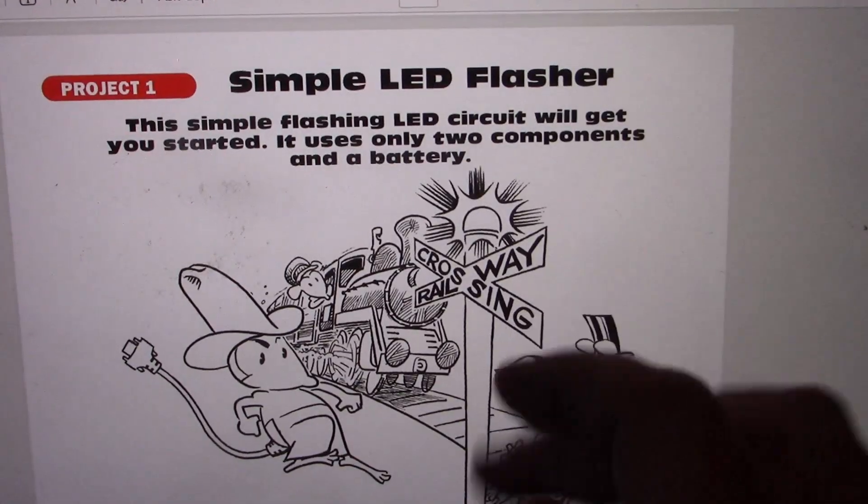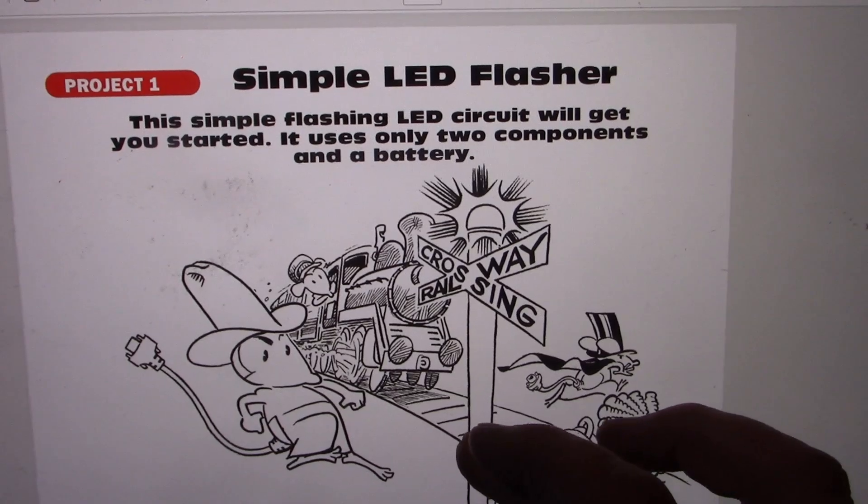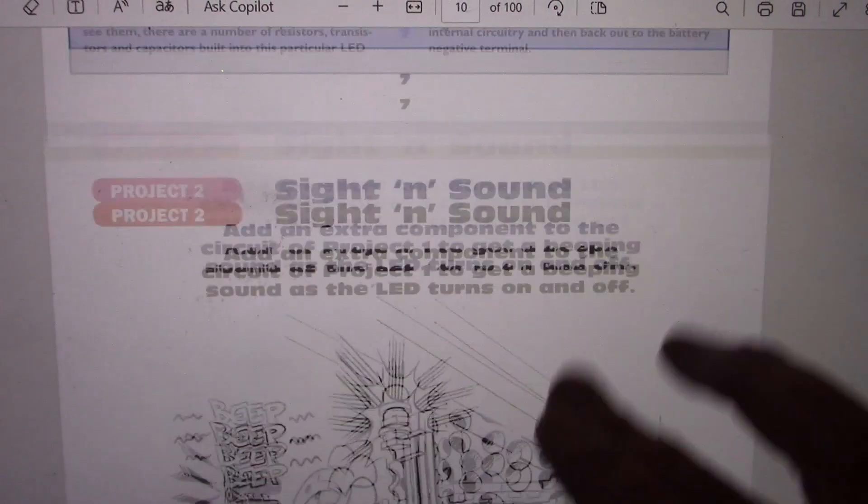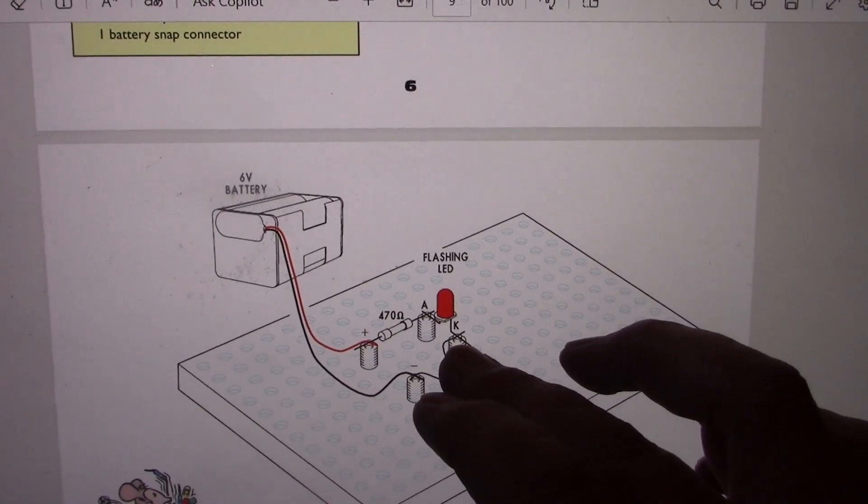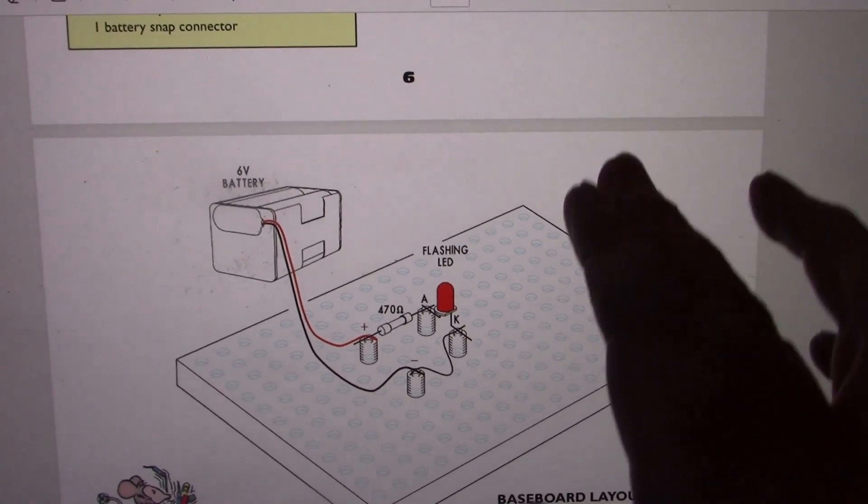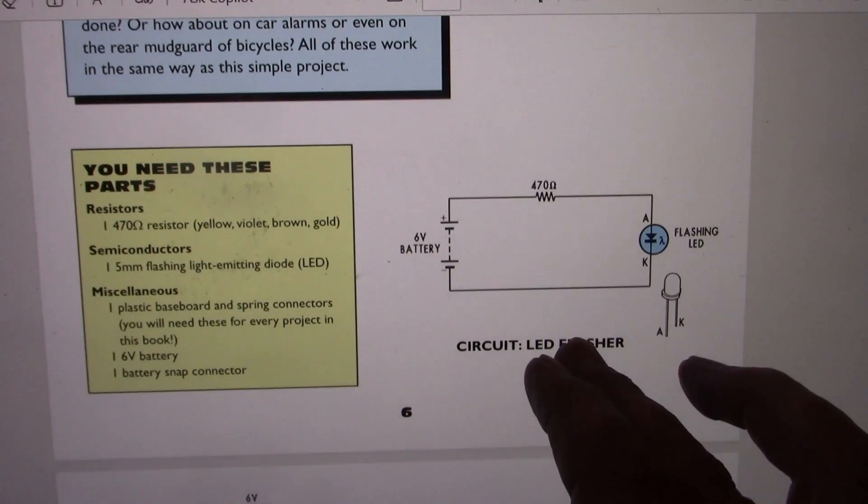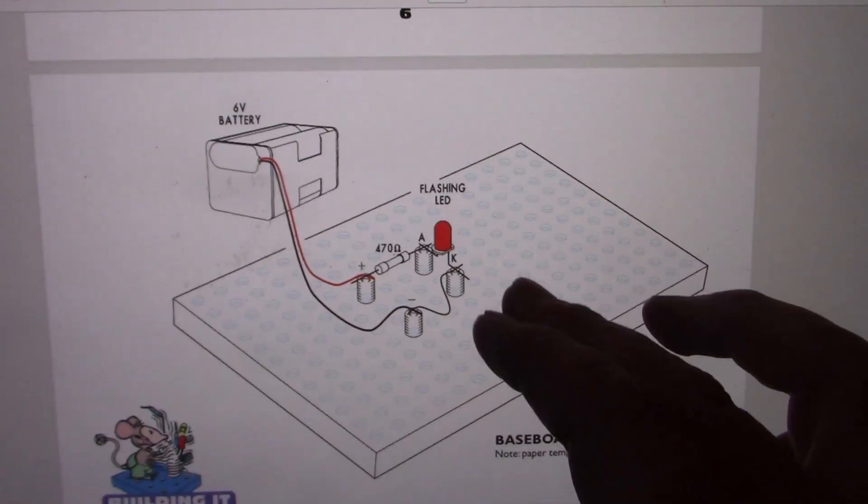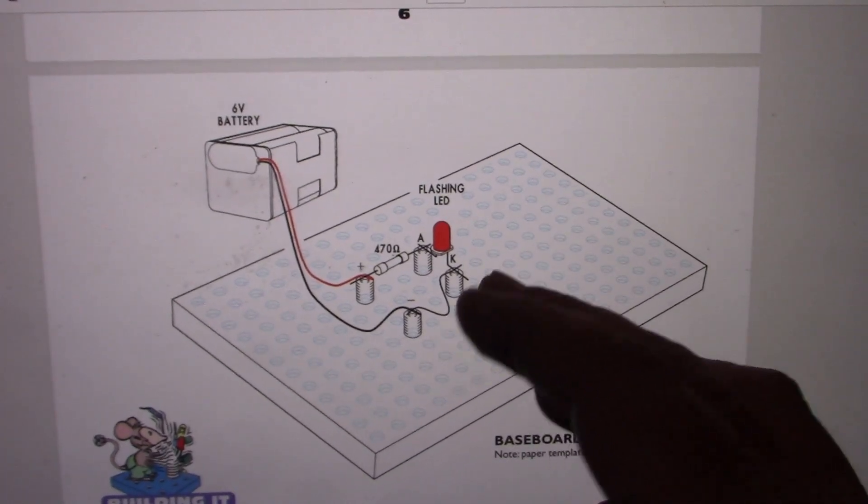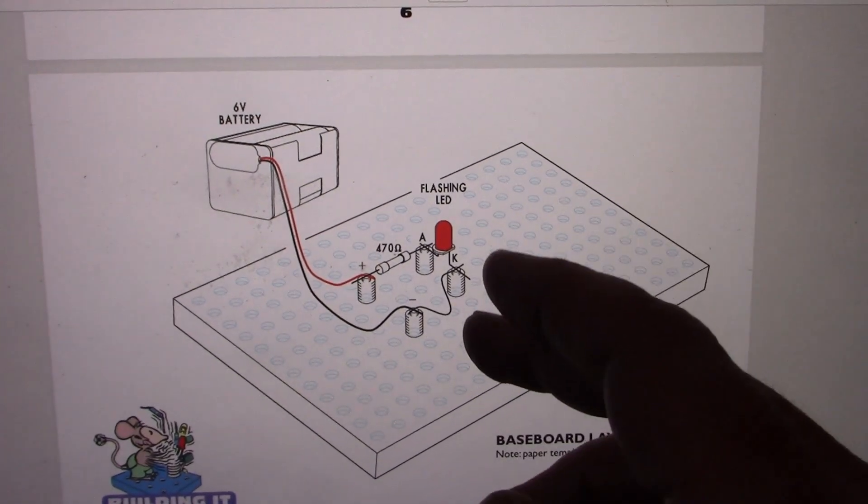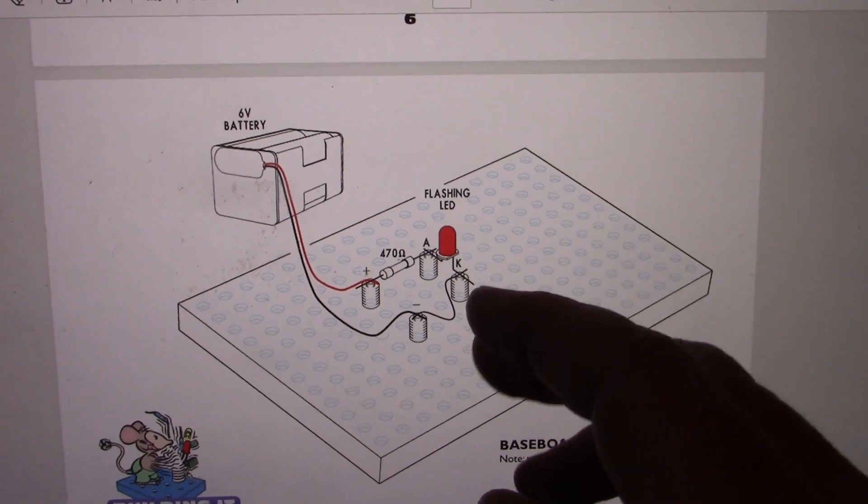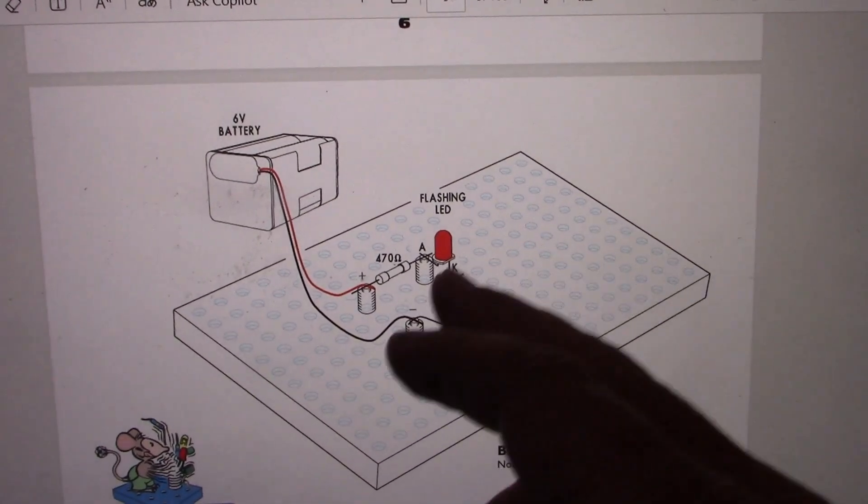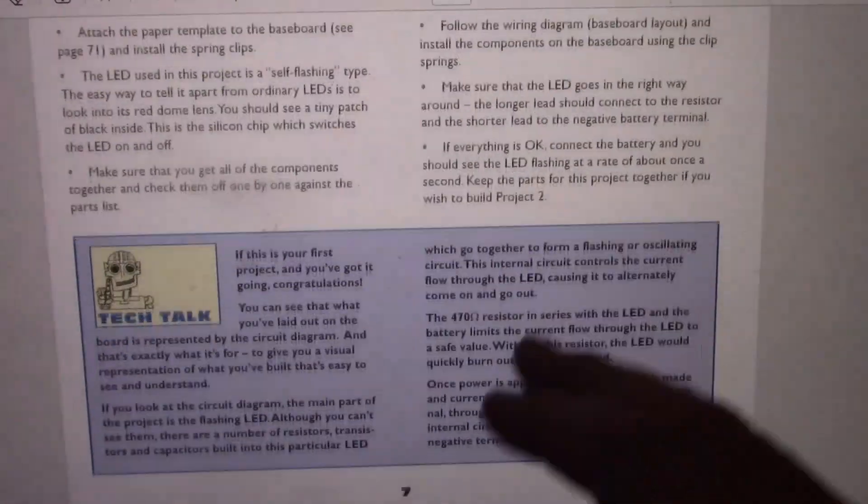And as with a lot of simple electronic kits, it starts off with an LED flasher. Now it looks incredibly simple for an LED flasher and that is because it uses a flashing LED. I'm not sure if they were available when Dick Smith Funway 1 kits came out. There you had to build an LED flasher that used transistors, resistors, capacitors, whereas here it's all self-contained in the flashing LED.